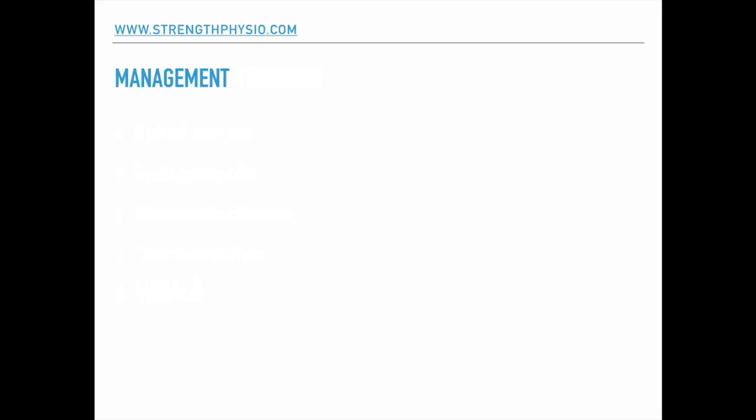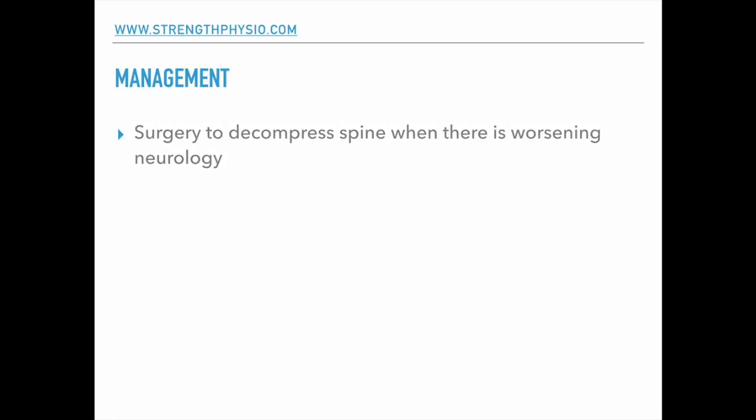Regarding management, if someone has a worsening case of neurology then often surgery will be done to decompress the spine. This is essentially to reduce the long-term impact on function. If someone has worsening neurology - weakness in the arms and legs, bladder or bowel symptoms, muscle atrophy - they may well suggest surgery to decompress the spine in order to stop that progressive neurology, because it helps to improve long-term function.